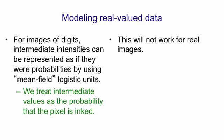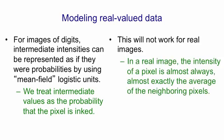However, it won't work for real images. In a real image, the intensity of a pixel is almost always, almost exactly, the average of its neighbors. So it's got a very high probability of being very close to that average and a very small probability of being a little further away.